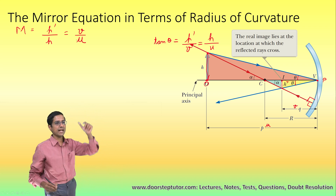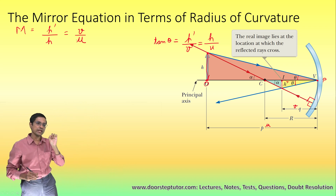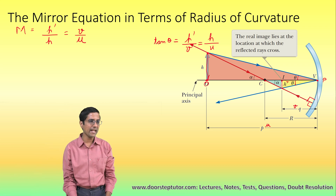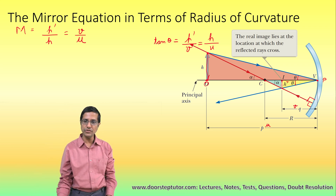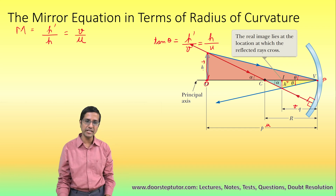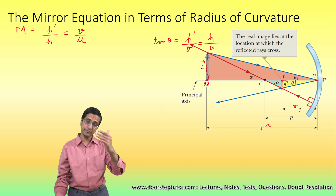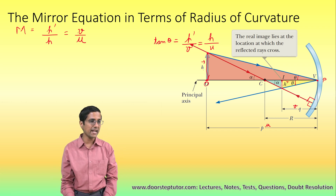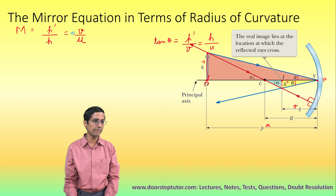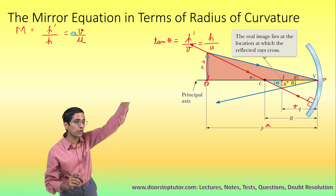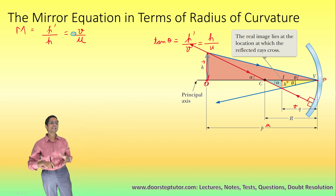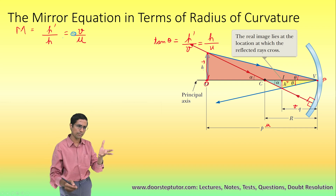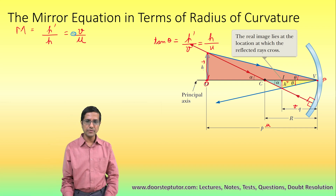The problem here is that H dash is inverted relative to the object — the object is erect whereas the image is inverted. To reflect that, we add a negative sign, so the magnification becomes minus V over U. This negative sign comes because of the sign convention, which we will study in the next class.